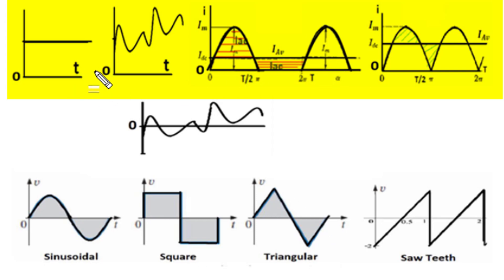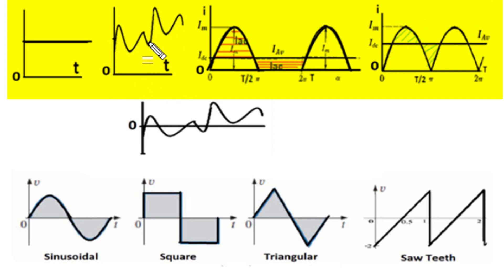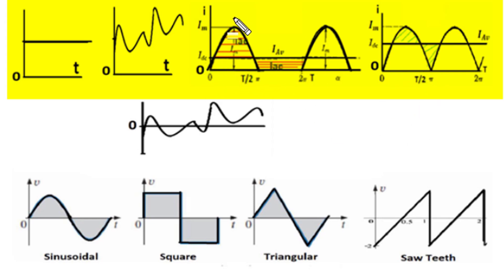In the first row, the first wave is ideal DC whose neither magnitude nor direction is changing. The second one is fluctuating DC where the magnitude is varying but the direction of current or polarity of voltage remains only in one direction. The third is half wave rectified output and the fourth is full wave rectified output, and these rectified outputs become DC when an AC signal is given to respective rectifier circuits.